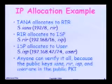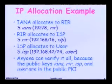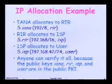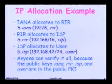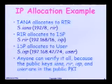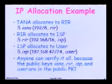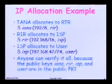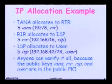The IANA allocates to an RIR. So 192/8 is bound to the RIR's public key, and that is signed with the private key of IANA. So that's verifiable — everybody has the IANA's public key and can verify this binding. Similarly, the RIR allocates to an ISP, so the RIR signs with its private key the binding of the slash 16 to the ISP's public key. The ISP allocates to a downstream ISP or to a user by signing with their private key the /24 bound to the user's public key. Anyone can verify it all because the public keys are available in the public key infrastructure.